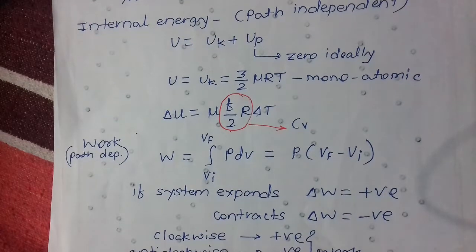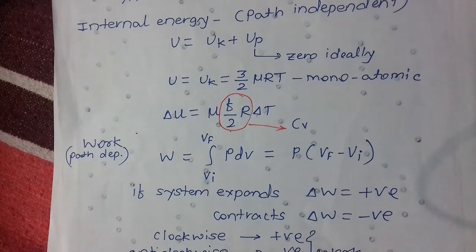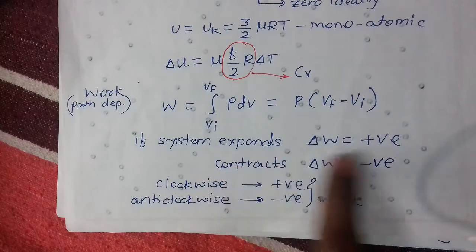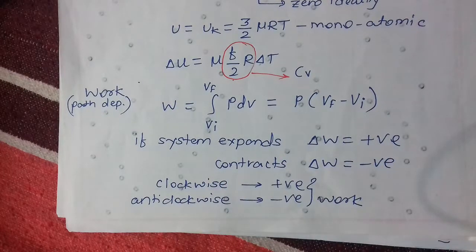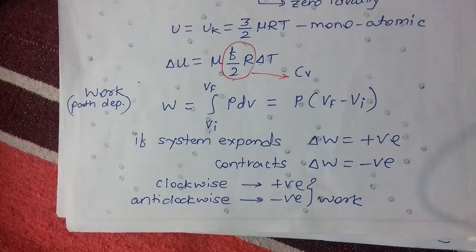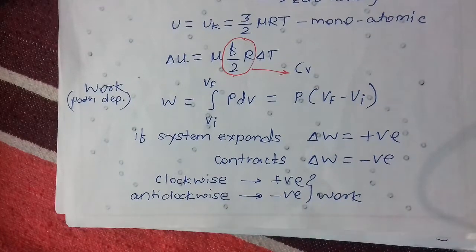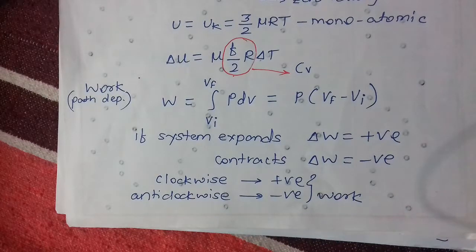Heat is path dependent, internal energy is path independent, and work done is also path dependent. Expansion means positive work, contraction means negative work. In clockwise cyclic processes work done is positive, and in anti-clockwise cyclic processes work done is negative.